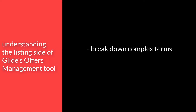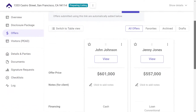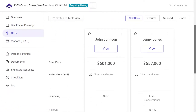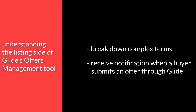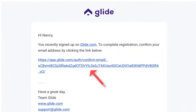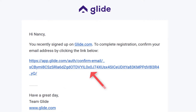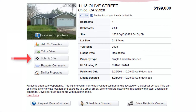Glide's Offers Management Tool helps the listing agent break down complex contractual terms into simple, easy-to-review key details. Listing agents will immediately receive notifications via email or text when an offer is submitted through Glide. To submit an offer, click the listing agent's unique transaction link or the button in the MLS.